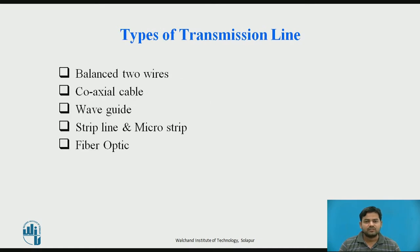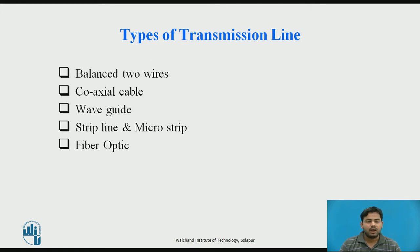The different types of transmission lines are: first, the balanced two-wire line; second, the coaxial cable; third, waveguides; fourth, microstrips or strip lines; and fifth, the fiber optics transmission line.